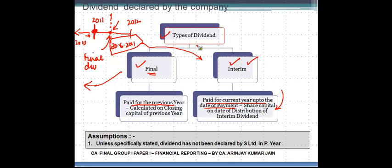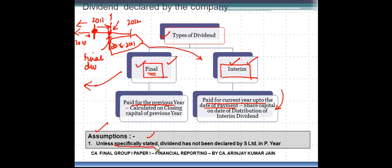To summarize: a subsidiary can declare two types of dividend — final and interim. Final is normally in respect of the previous year; interim is for the current year up to the date of payment. The share capital to be considered for final dividend is the closing capital of the last year; for interim, it is the capital on the date of distribution. The assumption in preparing consolidated financial statements is that unless specifically stated, no dividend has been declared by the subsidiary in the previous year.